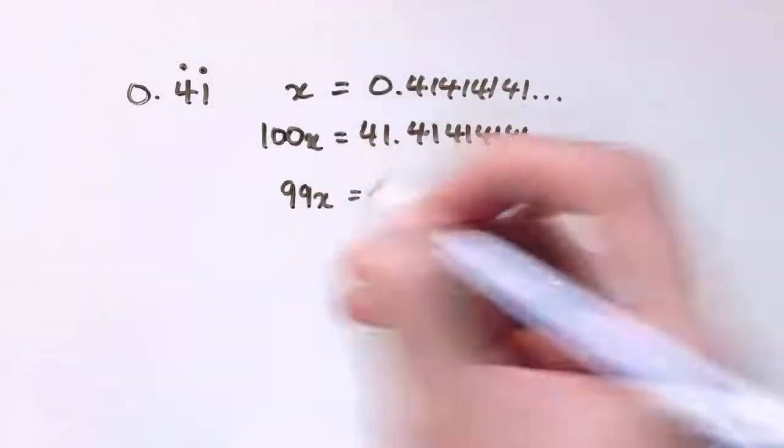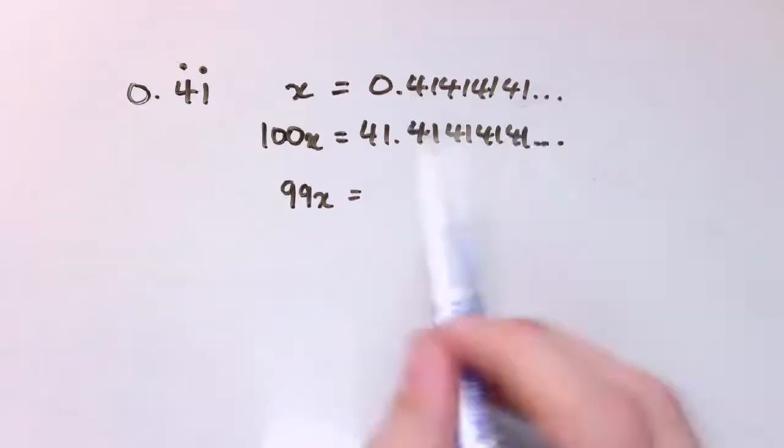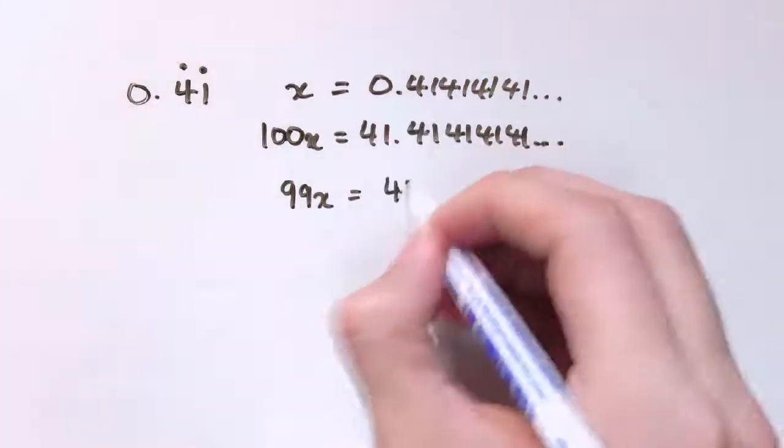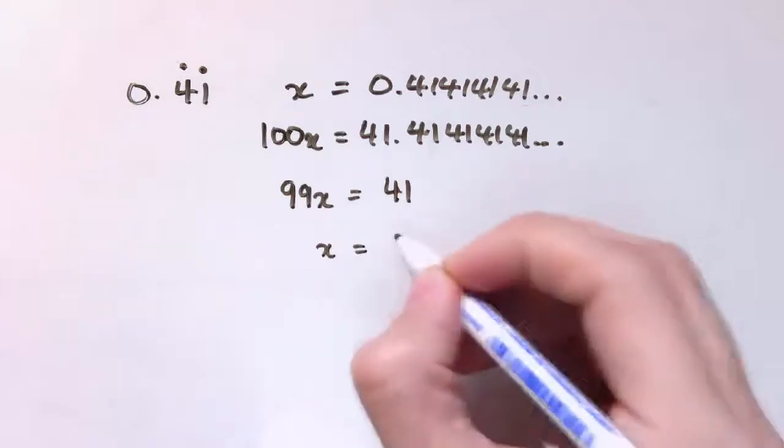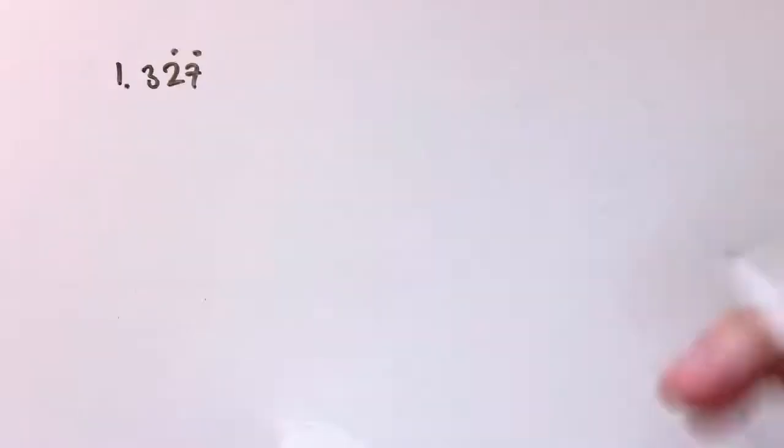100x here would be 41.41414141 and it just keeps going on forever. I've multiplied this number by 100, moving the decimal place that way by 2. If we do the subtraction again, we get 99x equals, and again that 0.41 recurring part is going to cancel out and we're left with 41. So x equals 41 over 99, and this doesn't cancel down, so that's our final answer.